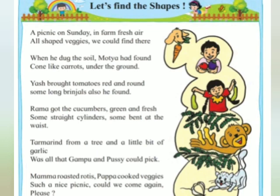Here we go! A picnic on Sunday in farm fresh air — all shaped veggies we could find there. When he dug soil, Muthya had found cone-like carrots under the ground. Yash brought tomatoes, red and round; some long brinjals also he found. Rama got the cucumbers green and fresh — some straight cylinders, some bent at the waist. Tamarind from a tree and a little bit of garlic was all that Gumpu and Pussy could pick. Mama roasted rotis, Papa cooked veggies. Such a nice picnic! Could we come again, please?